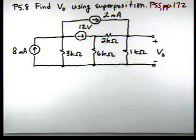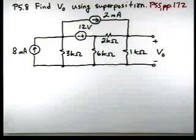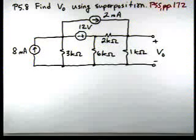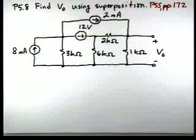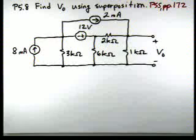Here's a problem-solving video for Problem 5.8. It says find V0 using superposition, and since we're using superposition, we're going to utilize the problem-solving strategy on page 172. Step one: a network contains multiple independent sources, and each source can be applied independently with the remaining sources turned off. Step two: if you turn a voltage source off, you replace it with a short circuit; if you turn off a current source, you replace it with an open circuit. Then we use circuit techniques and add all the responses together.